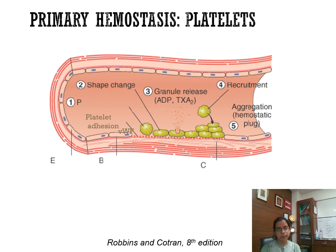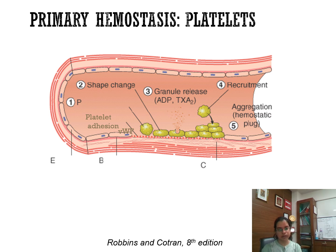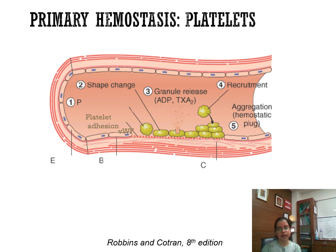After vasoconstriction, primary hemostasis takes place — formation of a platelet plug, and platelets play a major role. First there is injury and exposure of subendothelial collagen, which is highly thrombogenic, attracting platelets toward it. Platelets have a GP1B receptor which binds to von Willebrand factor on the collagen. In the injured endothelial cells, von Willebrand factor is released and it attaches to the GP1B receptor on the platelet. This is platelet adhesion.